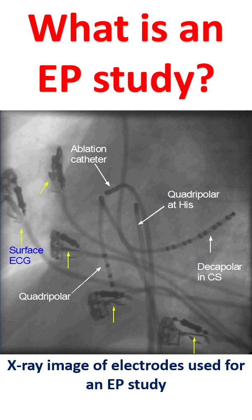This is done under local anesthesia through small holes made in the skin. The wires are guided into the heart using X-ray imaging equipment in an electrophysiology laboratory, or EP lab. Electrical signals from specified regions of the heart are recorded using a high fidelity recorder, the EP recorder.